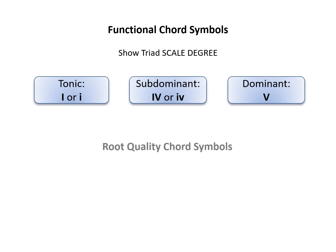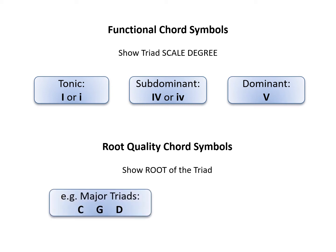Root quality symbols written above chords use uppercase letters to show the root of the chord. The standalone letter indicates a major triad and the letter followed by a lowercase m indicates a minor triad.